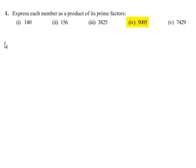Now, let us move on to the fourth bit in the question. The fourth number given is 5005. To express 5005 as a product of its prime factors,